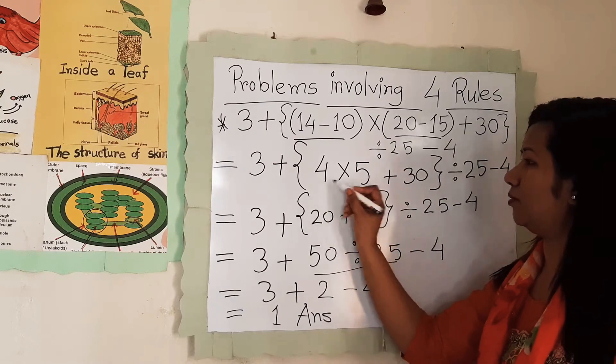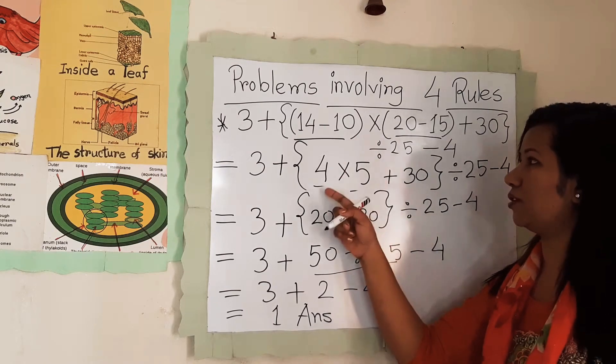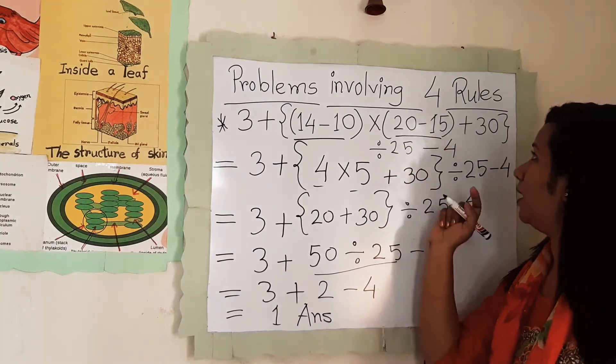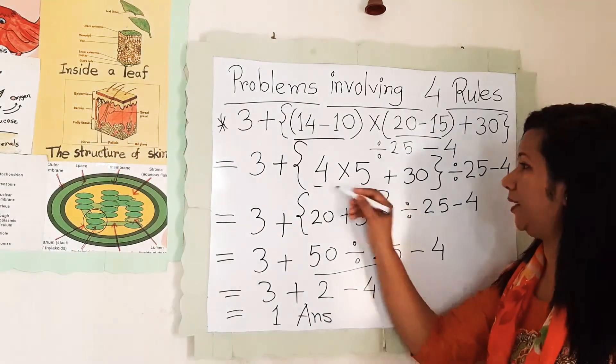So first we will do this one and this one. We got 14 minus 10, so it will be 4, and 20 minus 15, so it will be 5.